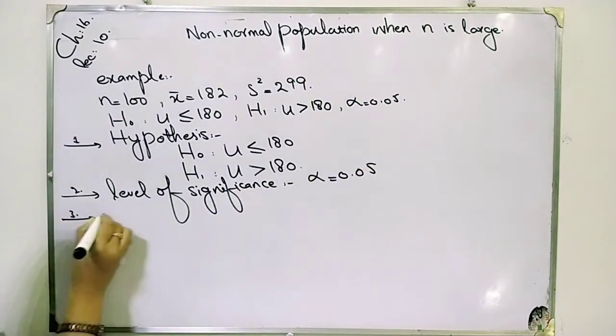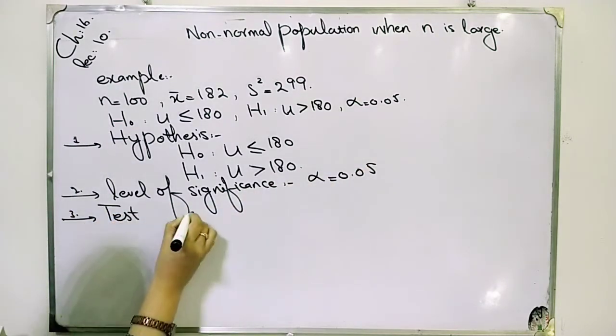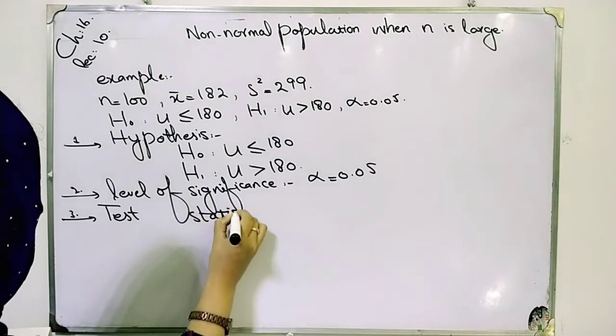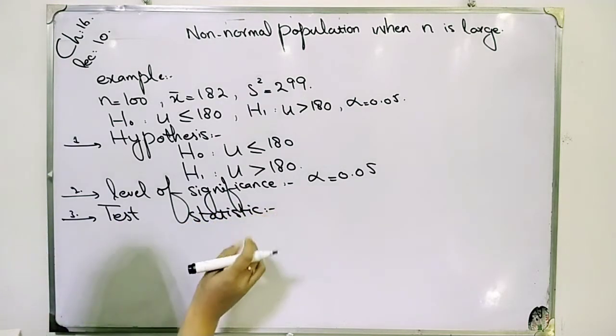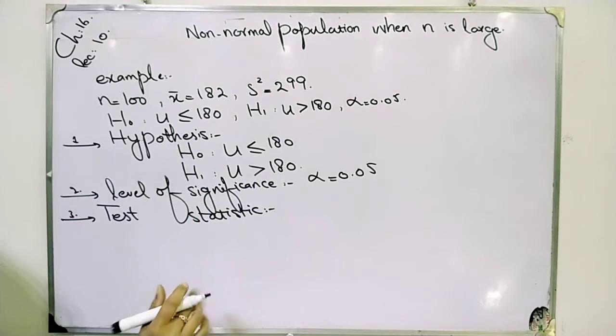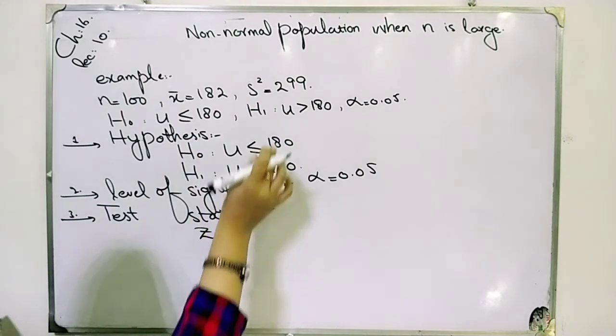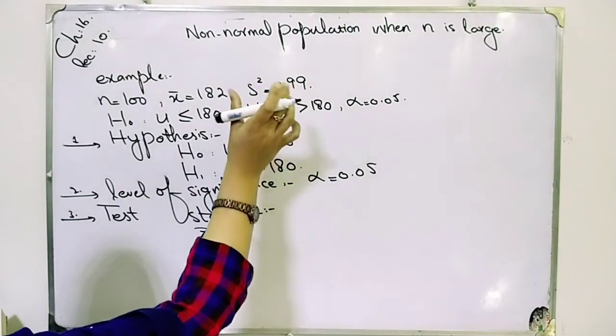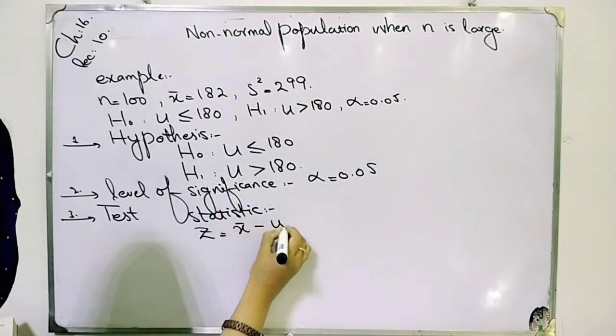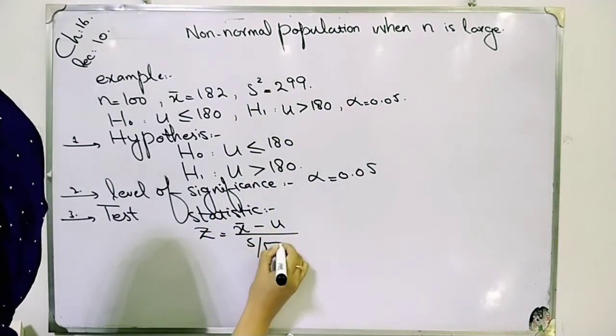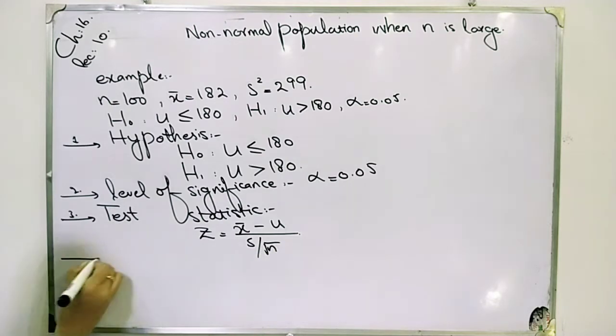Third, you have test statistics. Now in test statistics, you have to tell our formula. Everything is given. We have standard deviation. When sigma is unknown, we use z = (x̄ - μ)/(s/√n). This is the formula.